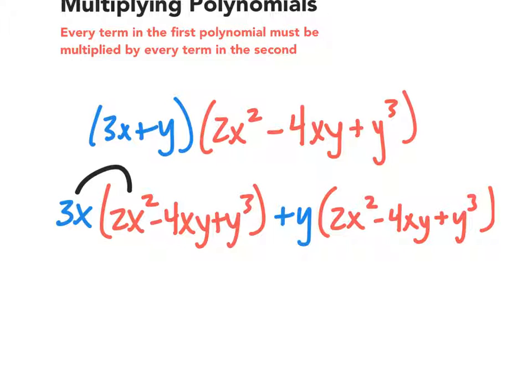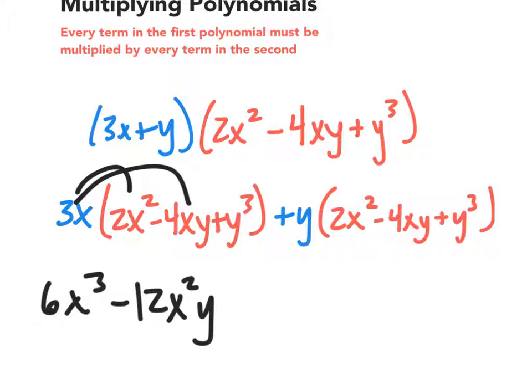So 3x times 2x squared is 6x cubed minus 12x squared y. And the x and the x made x squared, and we multiply it by y. And 3x times y cubed is 3xy cubed.